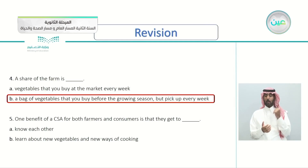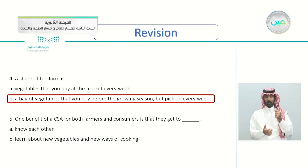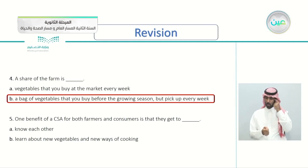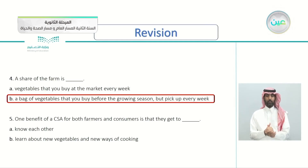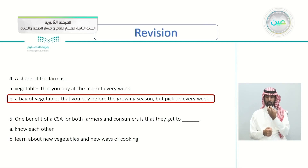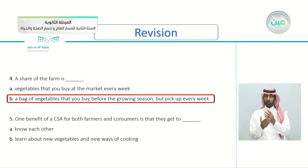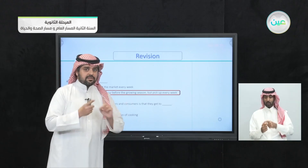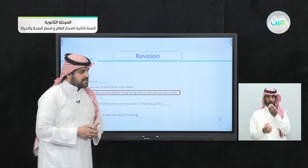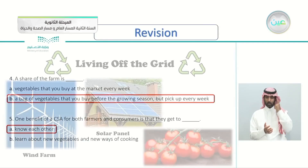Question five: one benefit of a CSA for both farmers and consumers — focus on the word 'both' — is that they get to A, know each other, or B, learn about new vegetables and new ways of cooking. Since this is an advantage for both parties, the answer is A — they get to know each other.